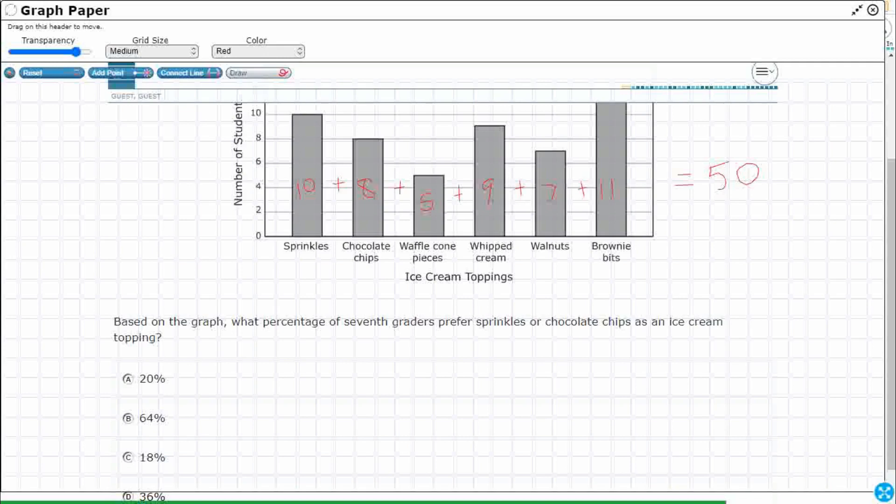Based on the graph, what percentage of seventh graders prefer sprinkles or chocolate chips? Let's look at both of those individually and then we'll connect them together because that 'or' is definitely very important, it's a connecting word here.